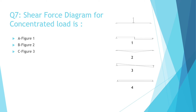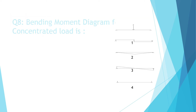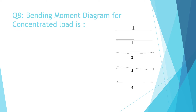Question 7: Shear force diagram for concentrated load is: a) Figure 1, b) Figure 2, c) Figure 3, d) Figure 4. The correct answer is a) Figure 1.